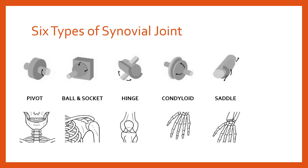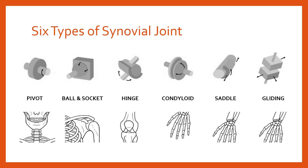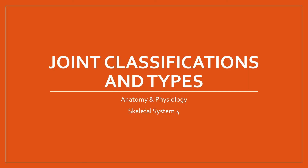The final type of synovial joint is the gliding joint. Similar to a condyloid joint but flatter — the contact points are not convex or concave to any significant degree — gliding joints allow small sliding movements in slightly different directions. A great example of gliding joints would be several of the joints of the carpals, which have slight movements in various directions and planes. Those are the six types of synovial joints. We've covered the three classifications, looked at synovial joints in particular, and outlined the six types.